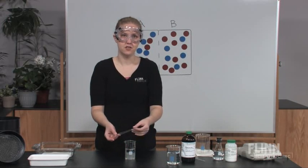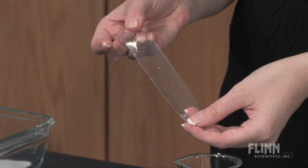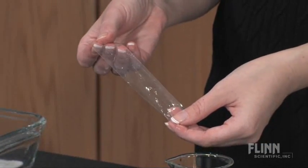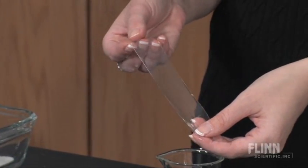Dialysis tubing is made of cellulose perforated with microscopic pores. The pores are small enough that it can be used to model the behavior of a cell membrane with respect to the size of the molecules that will or will not diffuse through them.